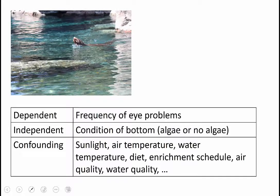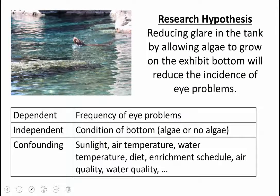Let's look at a couple of the questions and hypotheses that we talked about in the last video. If we're looking at the research hypothesis that the glare in the tank is causing the eye problems and allowing algae to grow on the bottom would reduce the glare and hence the eye problems, the dependent variable that would be measured is the frequency of eye problems. So how many animals have trouble with their eyes and for how long each year.